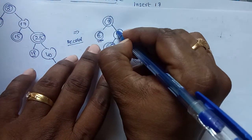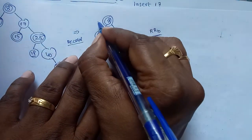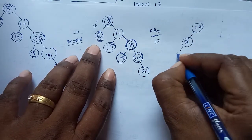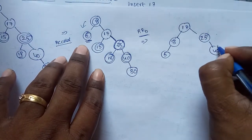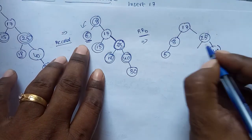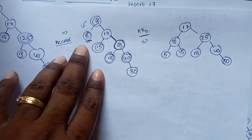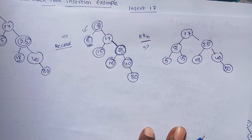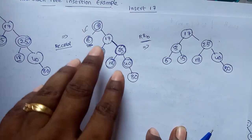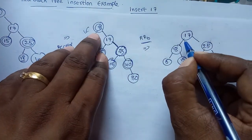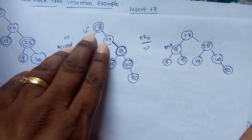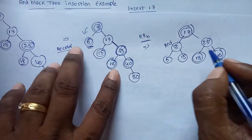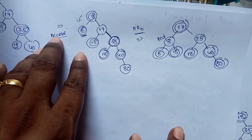By performing left rotation on 8, node 17 becomes the root, with 8 as left child and 25 as right child. 25's left child is 18, and 15 is also placed according to binary search tree order. In single rotation, change the color of the grandparent and parent: grandparent 8 (initially black) is converted to red, and 17 (red) is converted to black. The remaining node colors are unchanged.